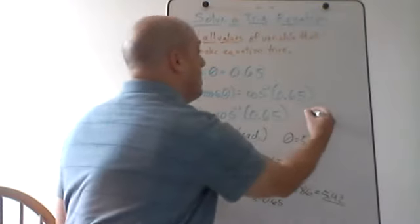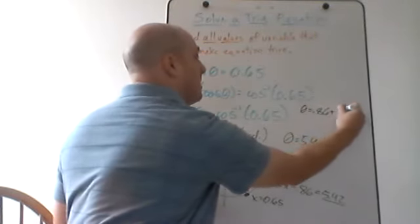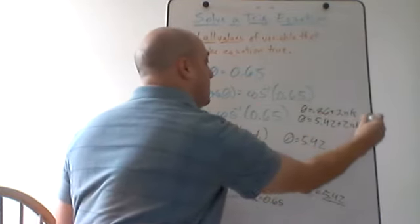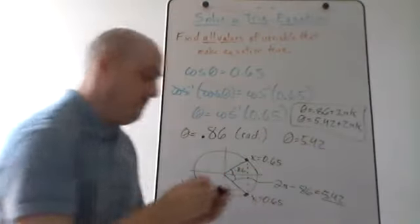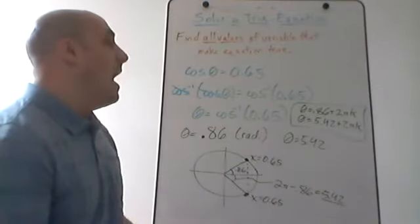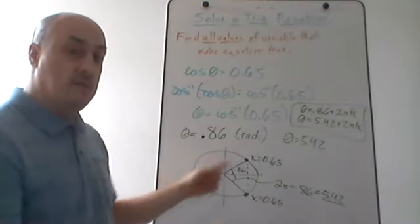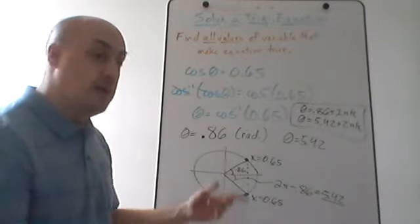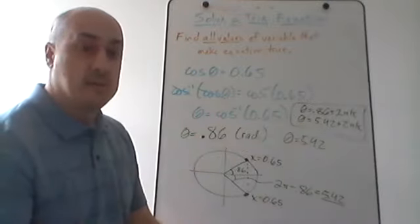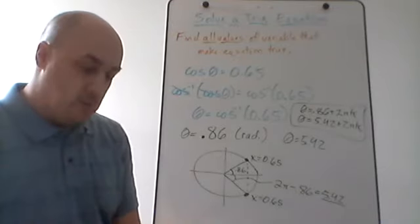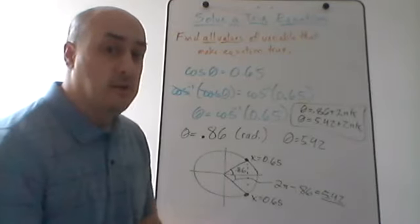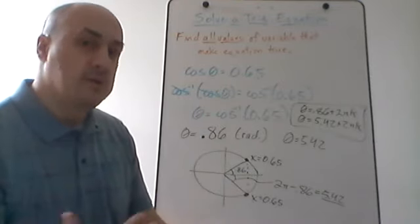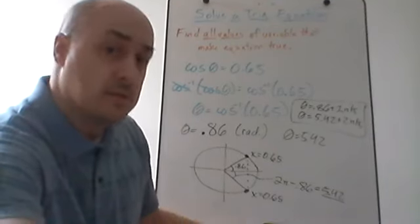To get all the solutions, I write theta equals 0.86 plus 2 pi k and theta equals 5.42 plus 2 pi k. Whatever answers I get from the first period, I just add 2 pi k to each of those, and that covers every possible solution — no matter how many times I go around the unit circle in whichever direction. That's how we solve these trig equations when we have to use a calculator. I'm going to do some other videos with more complicated types of trig equations, so make sure you check those out.